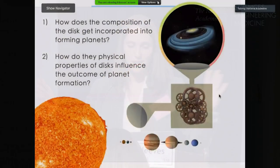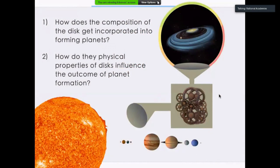To motivate this talk, the key goal here is we want to understand how the compositions of disks get incorporated into forming young planets. How does this carbon, oxygen, nitrogen get incorporated into planets?